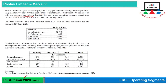Following amounts have been extracted from RL's draft financial statement for the year ended 30th June 2020, jismein hamein revenue, operating expense, profit before tax, total assets, total liabilities given hai. Detailed financial information is reported internally to the chief operating decision maker of each segment, so proper detailed information dhi jati hai.